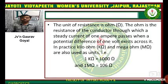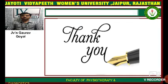The unit of resistance is the Ohm. One Ohm is the resistance of a conductor through which a steady current of 1 ampere passes when a potential difference of 1 volt exists across it. In practice, Kilo Ohm and Mega Ohm are also used. 1 Kilo Ohm is equal to 1000 Ohm, and 1 Mega Ohm is equal to 10^6 Ohm.